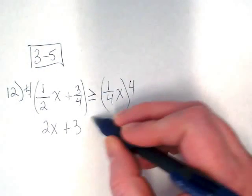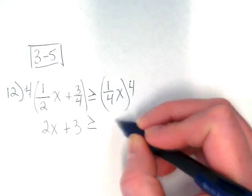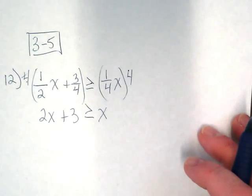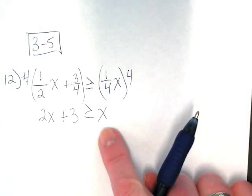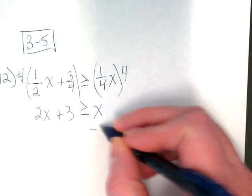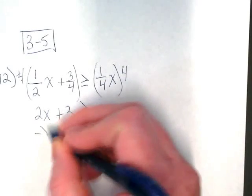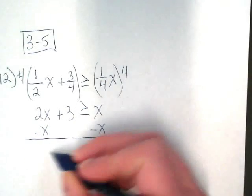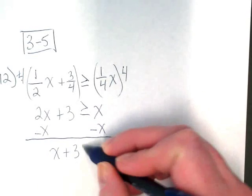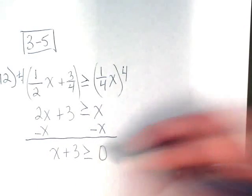And then I want to move this x to the left side because we always want the variables to be on the left since order matters with inequalities. That's going to make this x plus 3 is greater than or equal to 0.